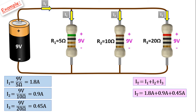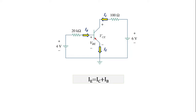We can apply Kirchhoff's current law in all circuits, not just resistors. For example, in a BJT transistor circuit, the sum of the incoming IB base current and IC collector current to the transistor is equal to the outgoing IE emitter current. Since we use this formula in transistor problem solutions, I wanted to show this example.